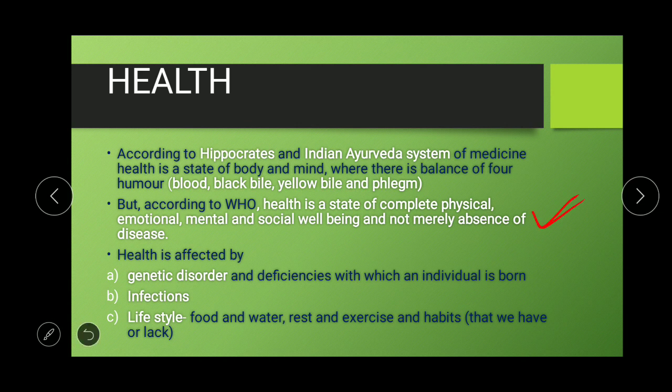This is the modern definition of health. Health is affected by genetic disorders — that is, disorders inherited from parents due to gene mutation or chromosomal mutation — then infections such as viral or bacterial infections, and lifestyle: the food and water we take, rest and exercise we give to our body, and the habits we possess or lack. When an imbalance occurs among rest, exercise, and our habits, it will severely affect our health.